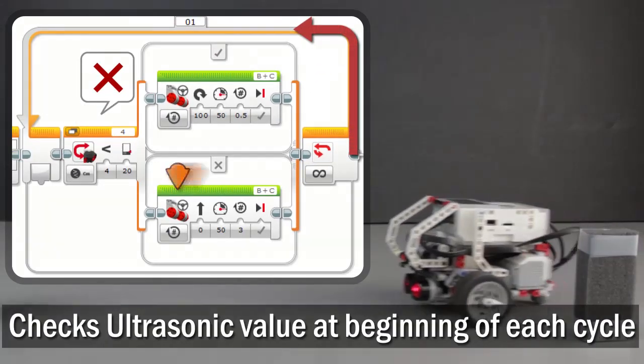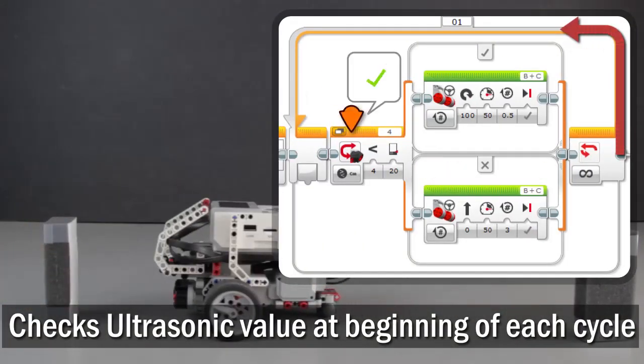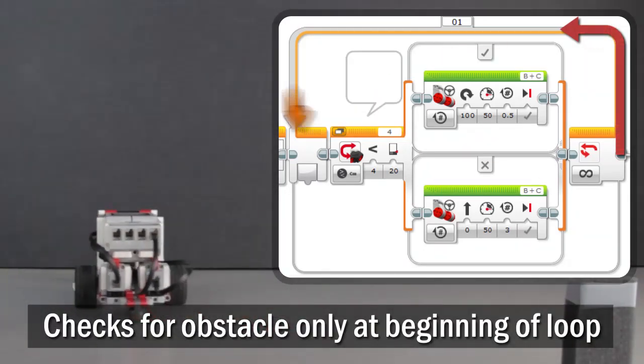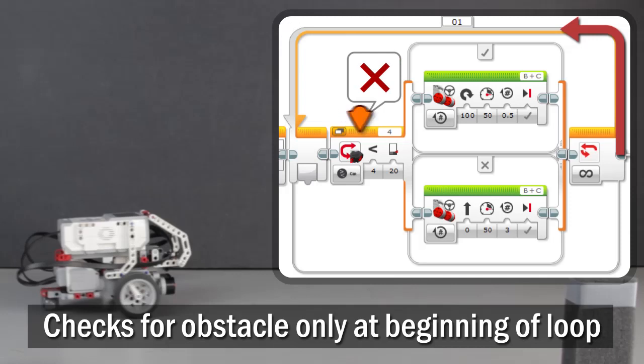At the beginning of every loop cycle, it checks the ultrasonic sensor and either moves forward or turns to the side, depending on whether there is an obstacle in the way at that exact moment.